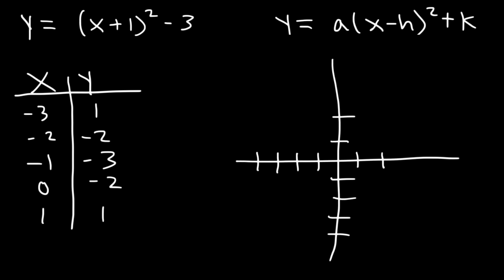Let's start with the vertex, which is (-1, -3). Then we have the point (0, -2) and (-2, -2). Next is (1, 1) and (-3, 1). So that's the graph.